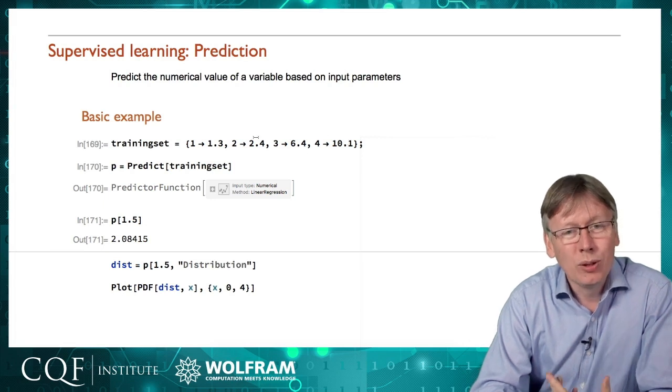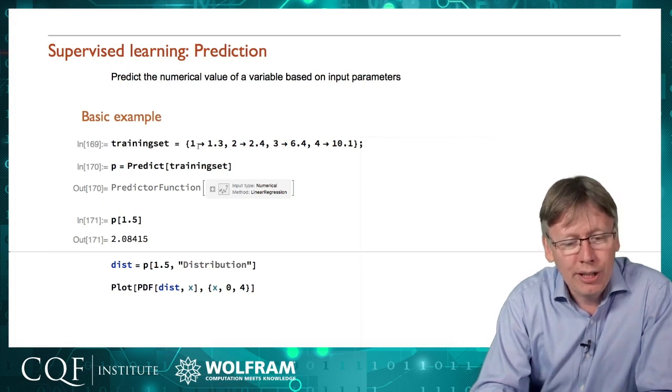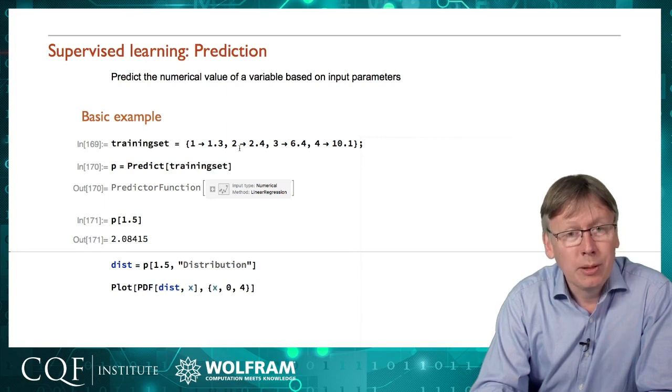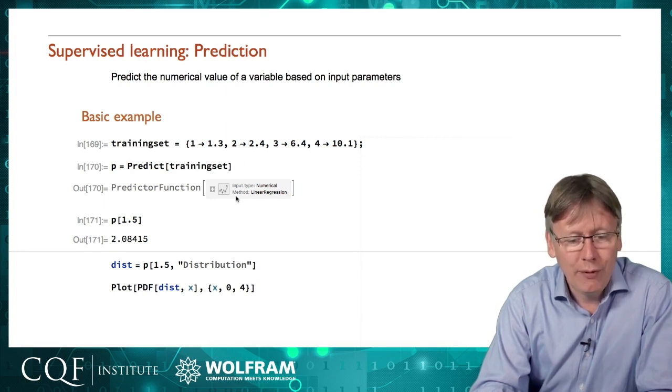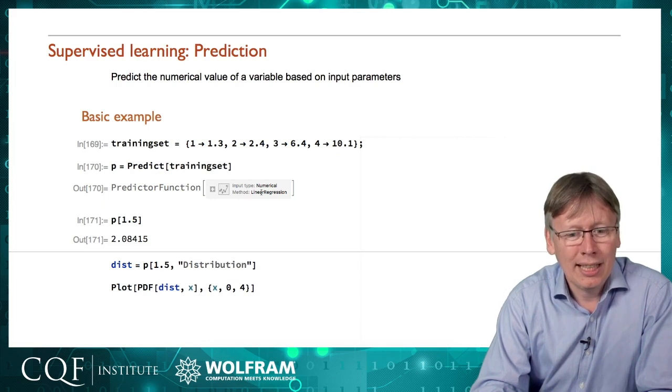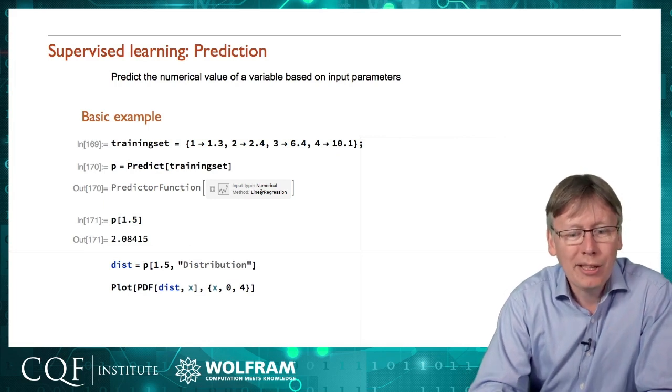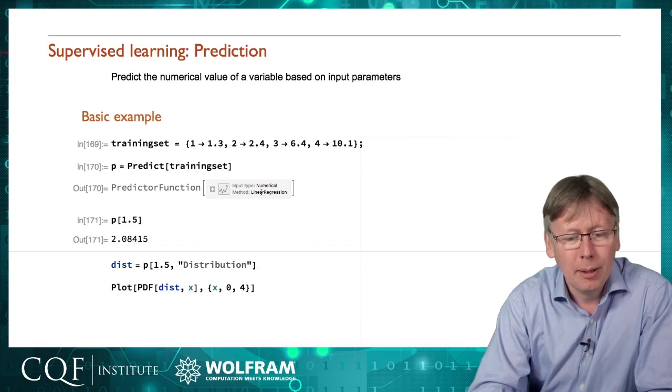This is the most trivial example I could think of. You could equally have done this by doing standard linear regression. And in fact, if you look at the method that is chosen, it's done exactly that. One dimension in, one dimension out, a bunch of numbers that are vaguely in a straight line, and it's done a linear fit to that.